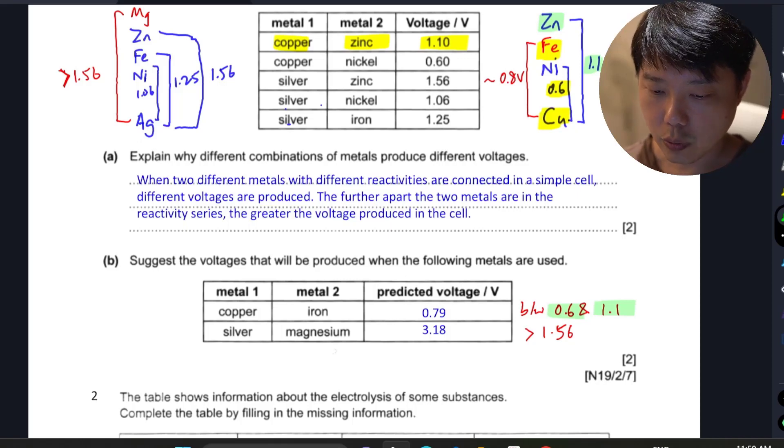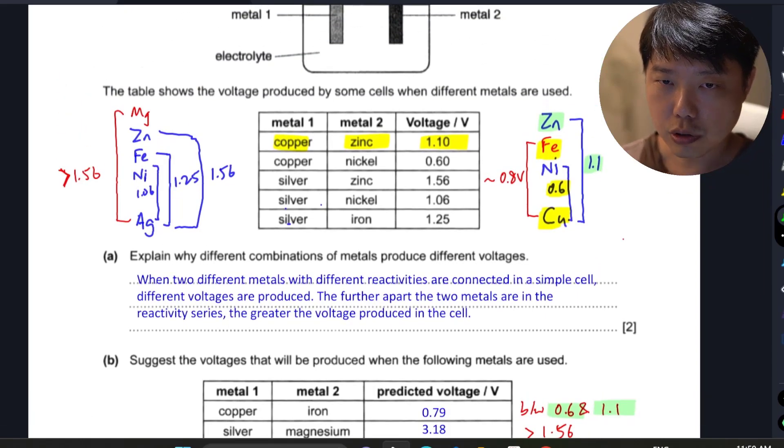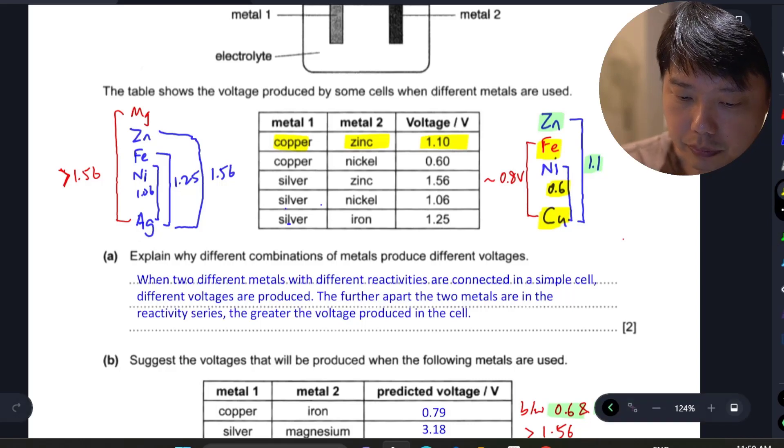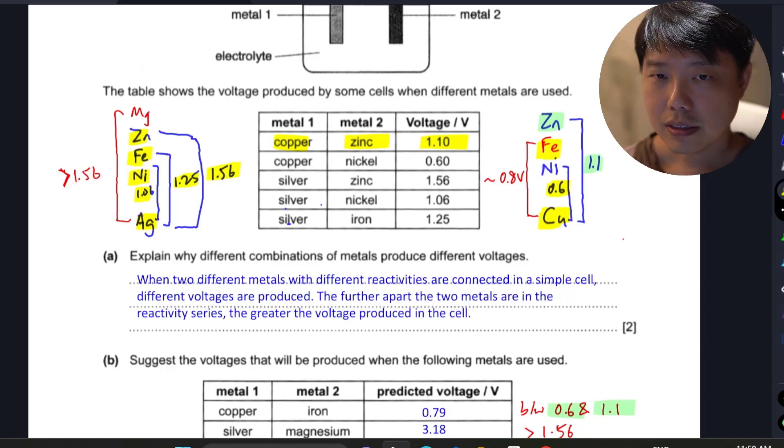The second question asks about silver and magnesium. This one is slightly more open-ended. The three examples they gave with silver and other metals produced 1.06, 1.25, and 1.56 volts. They want you to estimate silver and magnesium.